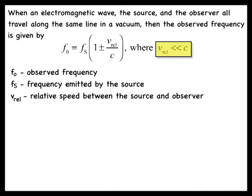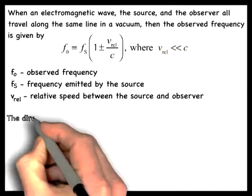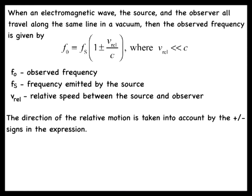Since v_rel is the relative speed of the source and the observer, it is like any speed, and has no algebraic sign associated with it to denote the direction. The direction of the relative motion is taken into account by choosing the plus or minus sign in the expression.